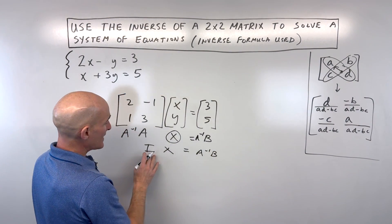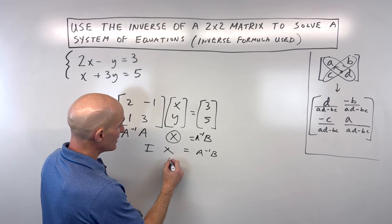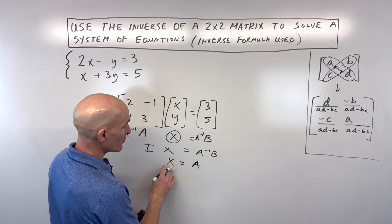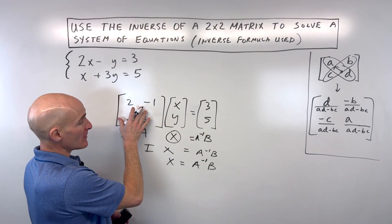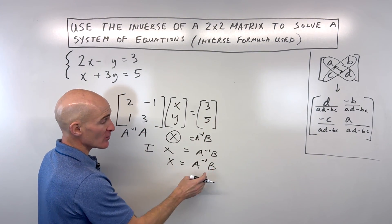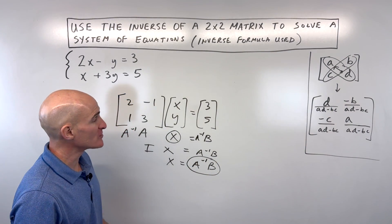Okay, and the identity matrix is kind of like the number 1. 1 times anything is itself. So you're going to end up getting x equals, or our variable matrix equals, the inverse of our coefficient matrix times our B, which is our solution matrix. So this is what we're after right here, A inverse B.